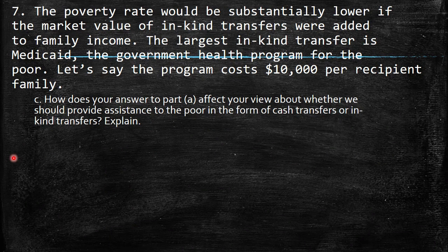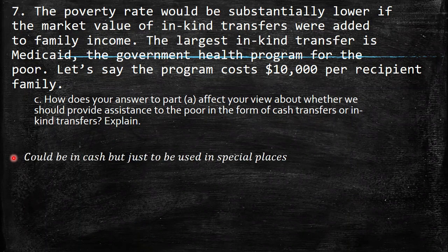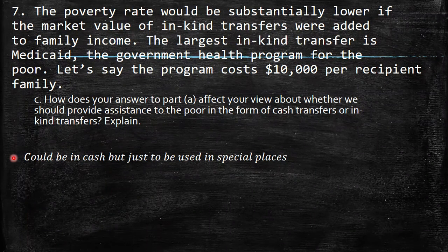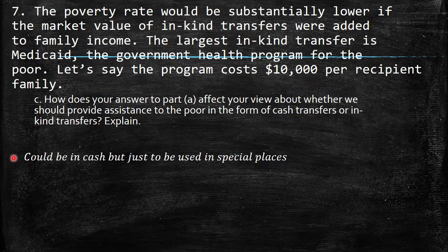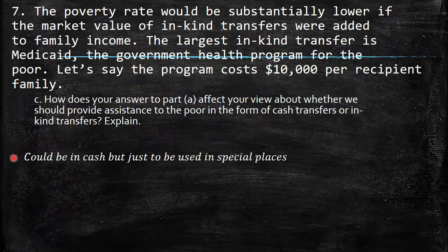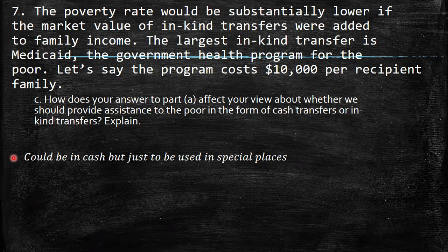Part C: Should assistance be provided as cash or in-kind transfers? It could be cash, but restricted to be used only in specific places. For example, if we provide clothes but the person needs medicine or food more urgently, they should be able to buy what they actually need to maximize their utility. So cash is better, but it should be restricted — for example, a card usable only at supermarkets or pharmacies.